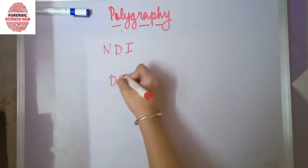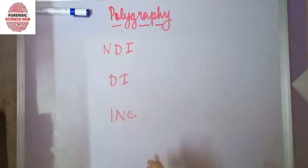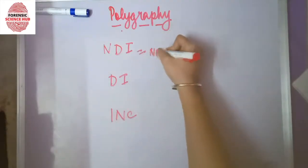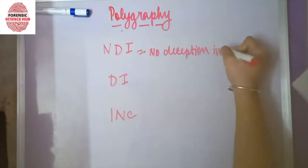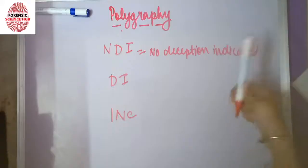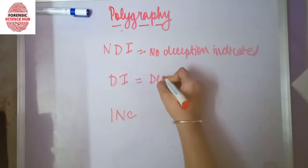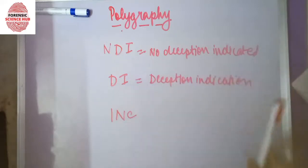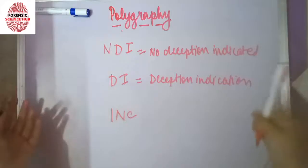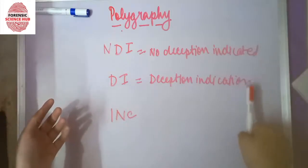NDI means 'no deception indicated,' meaning the subject was telling the truth and no abnormal activity was indicated. DI means 'deception indicated,' meaning fluctuations were seen in the graph and the person is not telling the truth.